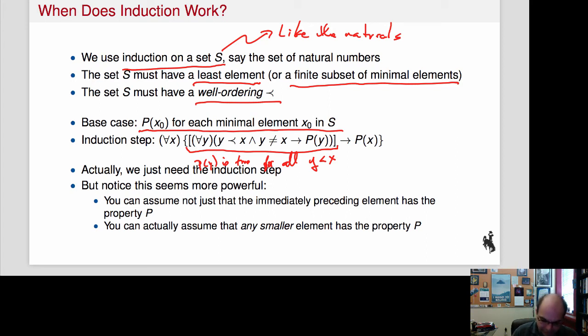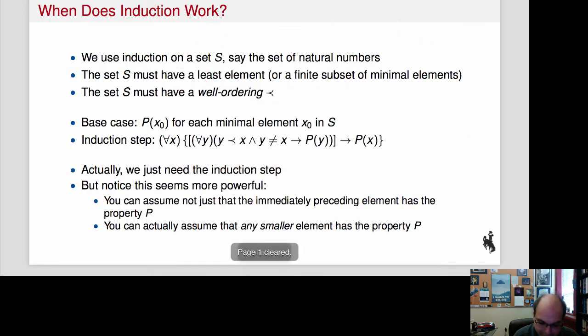The second observation I want to make is that this seems quite a bit more powerful. Because when we were talking about mathematical induction, all we could do was assume that P of n was true for the n just before the current one. So P of n implies P of n plus 1. But with this phrasing, I'm actually saying that I can assume that P of n is true for all of the smaller n. So if I want to prove P of 10, I don't just get to assume that P of 9 is true. I can actually use the fact that P of 9 and P of 8 and P of 7 and P of 6 all the way to P of 0, that all of those are true. It turns out that it's actually not really more powerful because in order to get to P of 9, I needed to prove that all of those were true. But it sure is convenient, isn't it? That's sometimes called complete induction or strong induction.